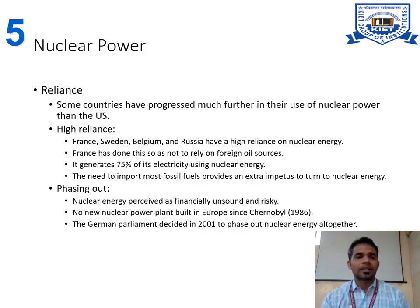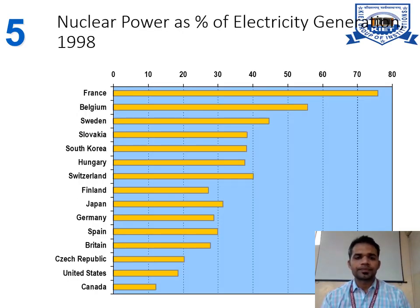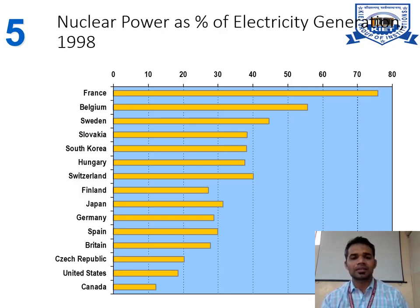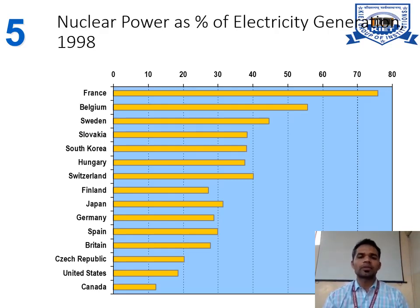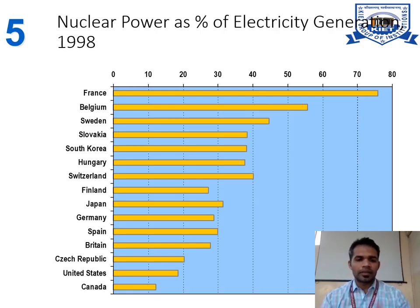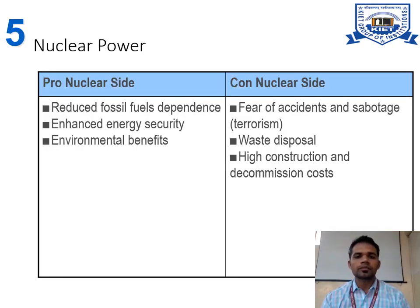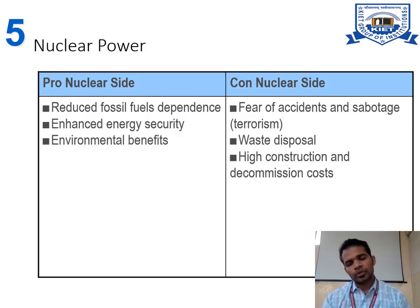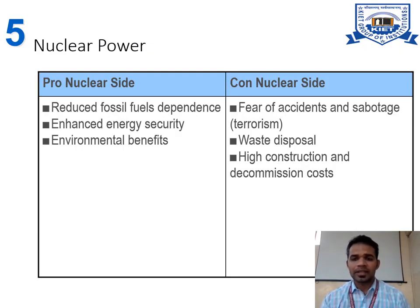Nuclear power as a percentage of electricity generation in 1998 shows France has the largest share of nuclear power generation. The US and Canada also contribute significantly. Pros of nuclear power include reduced fossil fuel dependence, enhanced energy security, and environmental benefits. Cons include fear of accident and sabotage, waste disposal challenges, and high construction and decommissioning costs.